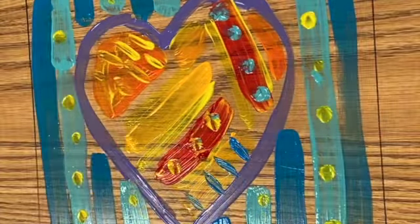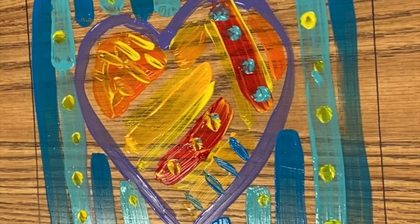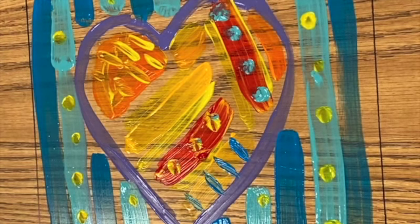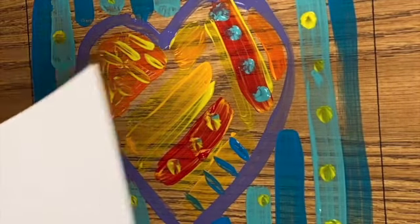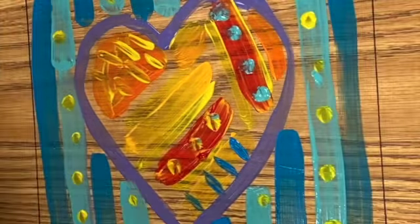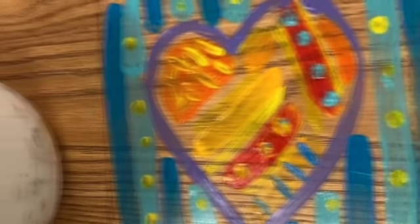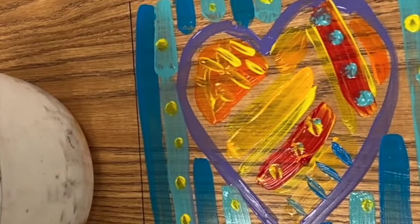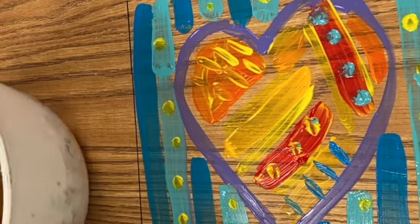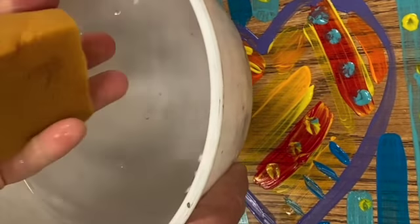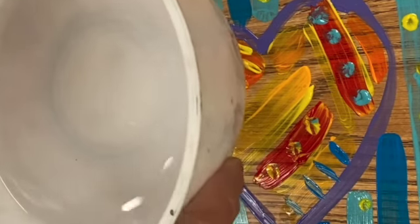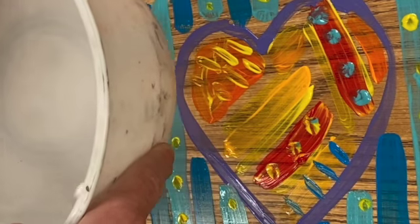So once you're happy with your picture then it's time to print it. In order to do that I'm going to get my paper again, and this time I'm going to turn it over and I need a damp sponge. You'll have a bowl of water at your table. I'm going to dip my sponge into the water and then squeeze all of the water out of it. I should not see anything dripping from my sponge.